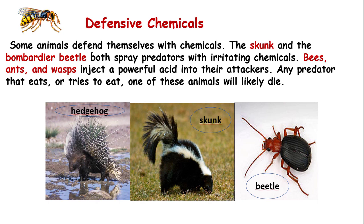Some animals defend themselves with chemicals. The skunk and the bombardier beetle both spray predators with irritating chemicals. Bees, ants, and wasps inject a powerful acid into their attackers. Any predator that eats or tries to eat one of these animals will likely be harmed. These are examples of defensive chemicals used to protect themselves.